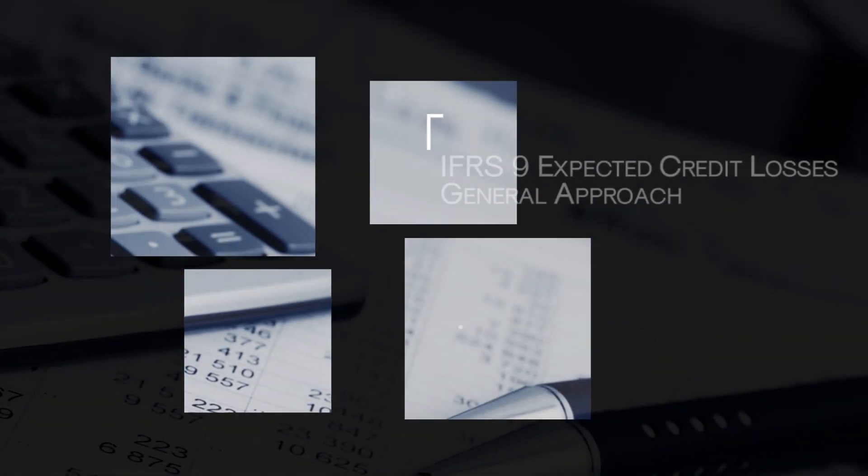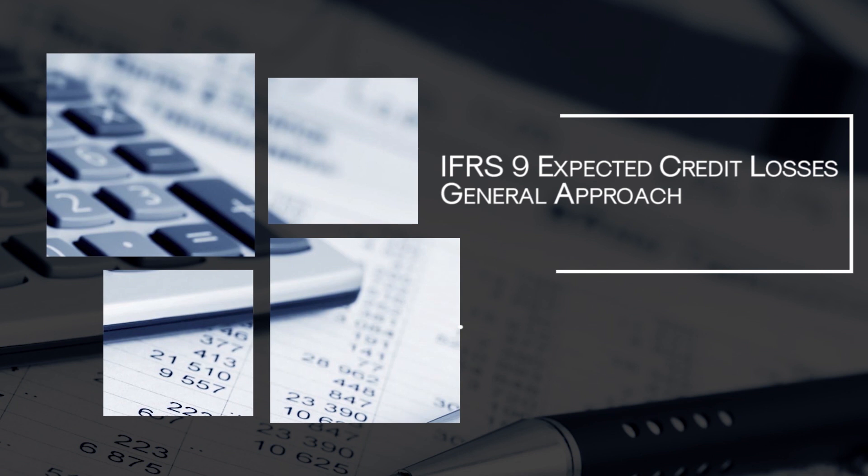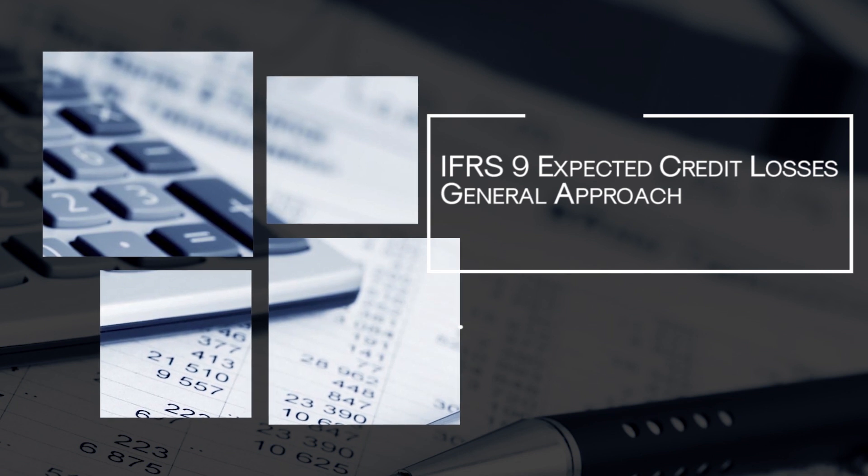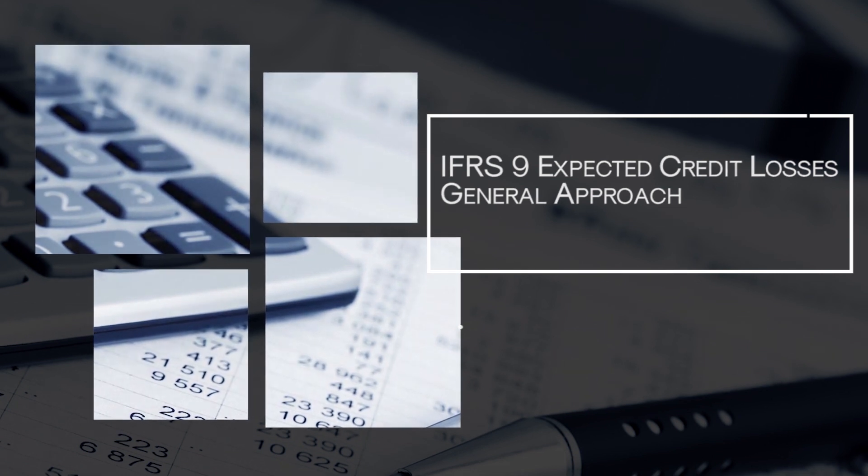Hello, my name is Saket Modi. I'm a financial trainer and consultant. IFRS 9 requires impairment allowance to be recognized based on expected credit losses. The general approach requires an entity to track changes in credit risk.